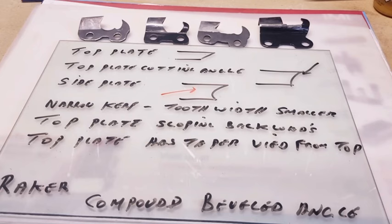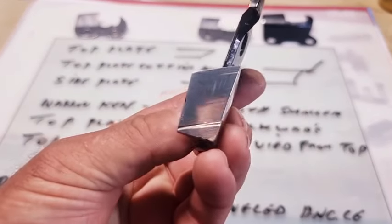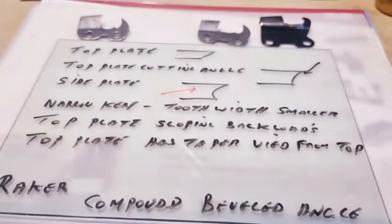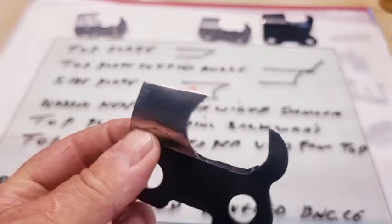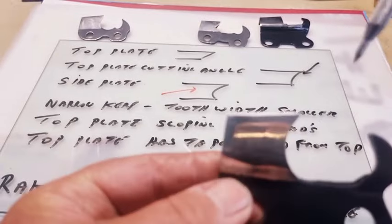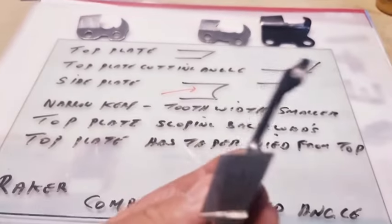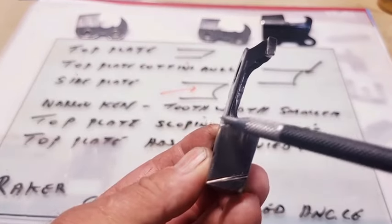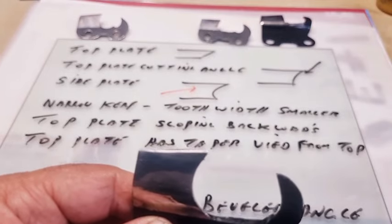The first term is top plate — you'll hear people refer to the top plate angle, which is this angle here. Then there's the top plate cutting angle. On this particular tooth, like most teeth, there are two angles — it's a compounded beveled angle. There's another sloping angle that goes down at 60 degrees, so that face on the tooth can be angled differently. We have between 25 and 30 degrees on one angle and 60 degrees on the other.